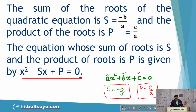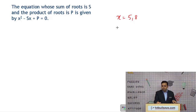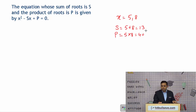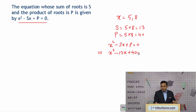Let us discuss one example. Let the roots be 5 and 8, and we have to find the equation whose roots are 5 and 8. The sum of roots is 5 + 8 = 13 and the product of roots is 5 × 8 = 40. The equation is x² − sx + p = 0, so putting the values we get x² − 13x + 40 = 0. This is the equation which has roots 5 and 8.